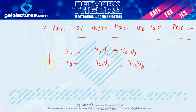These two equations are KCL equations, and the Y values are admittances. Admittance means current divided by voltage, or equivalently 1 divided by impedance. This gives us the Y matrix.